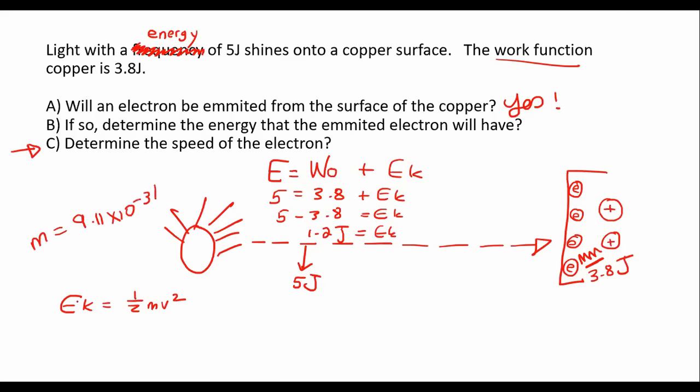We can say that the kinetic energy 1.2 equals one half times the mass times velocity squared. Now we need to get velocity squared by itself. That would be 1.2 divided by one half times 9.11 times 10 to the minus 31.